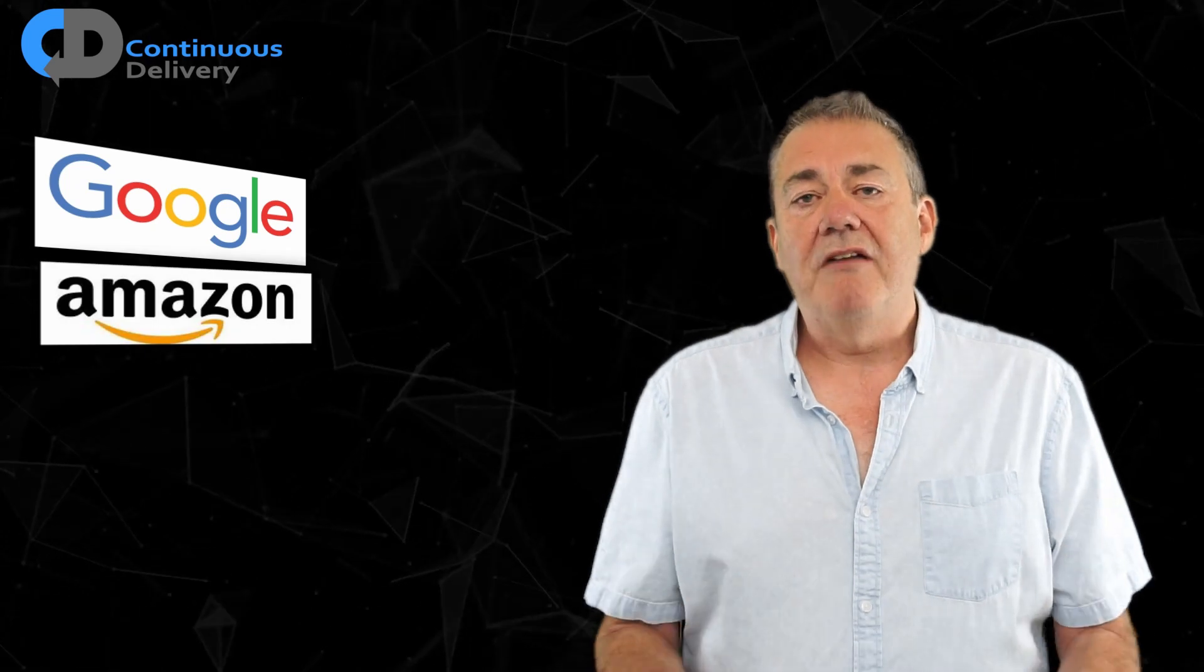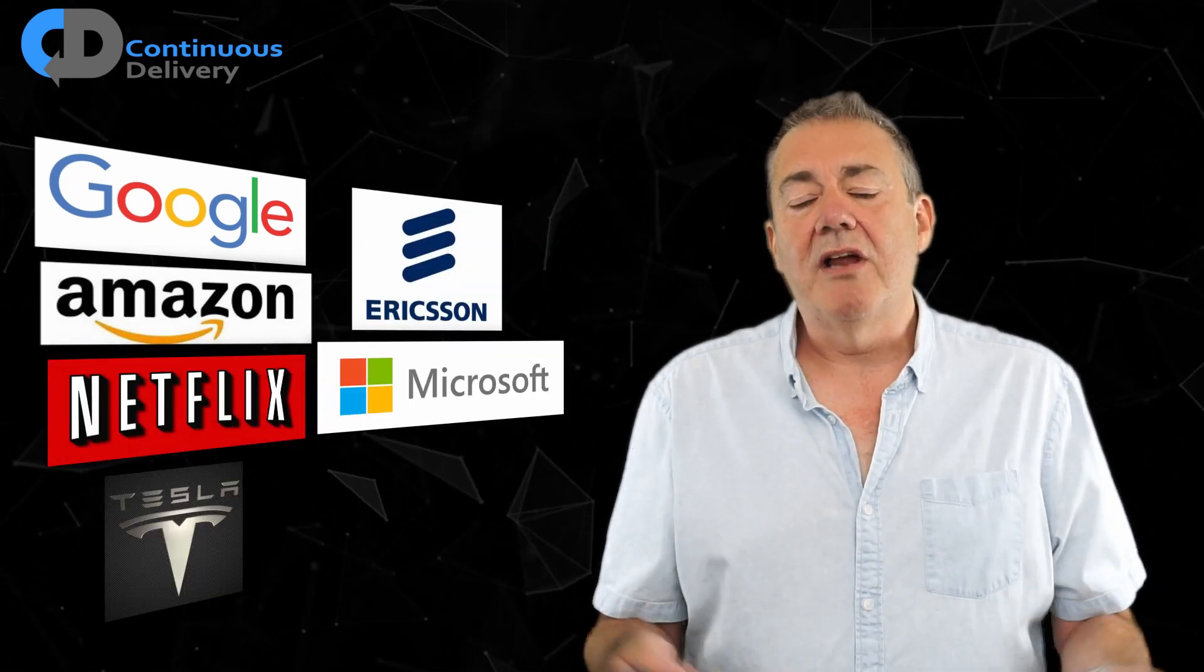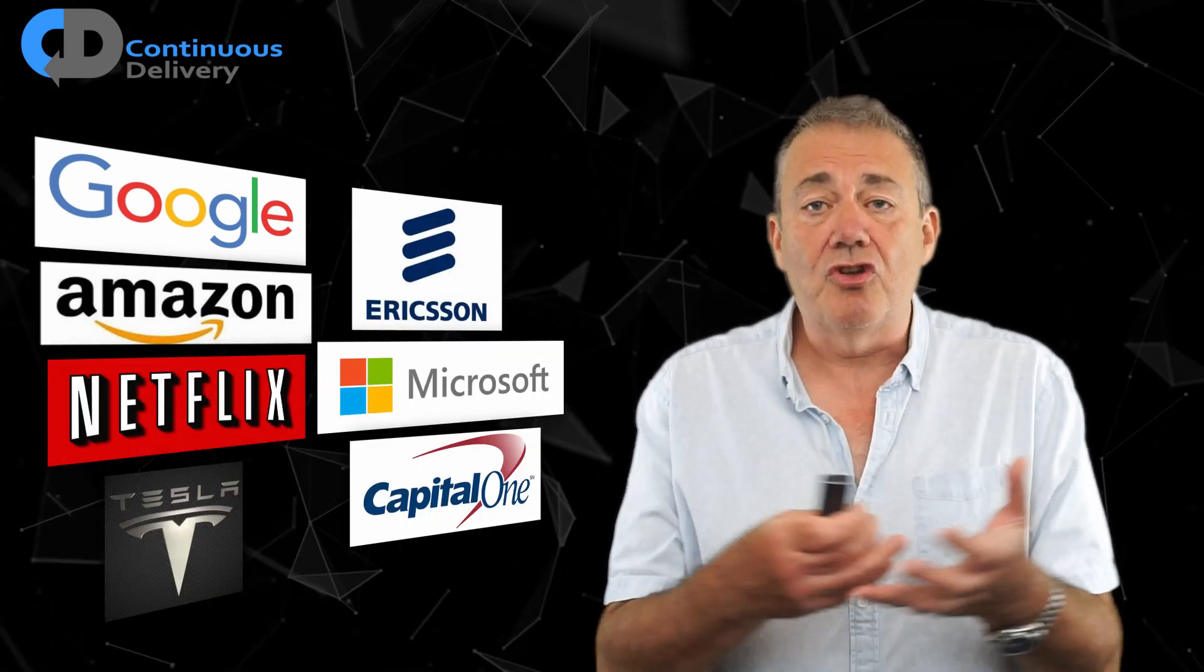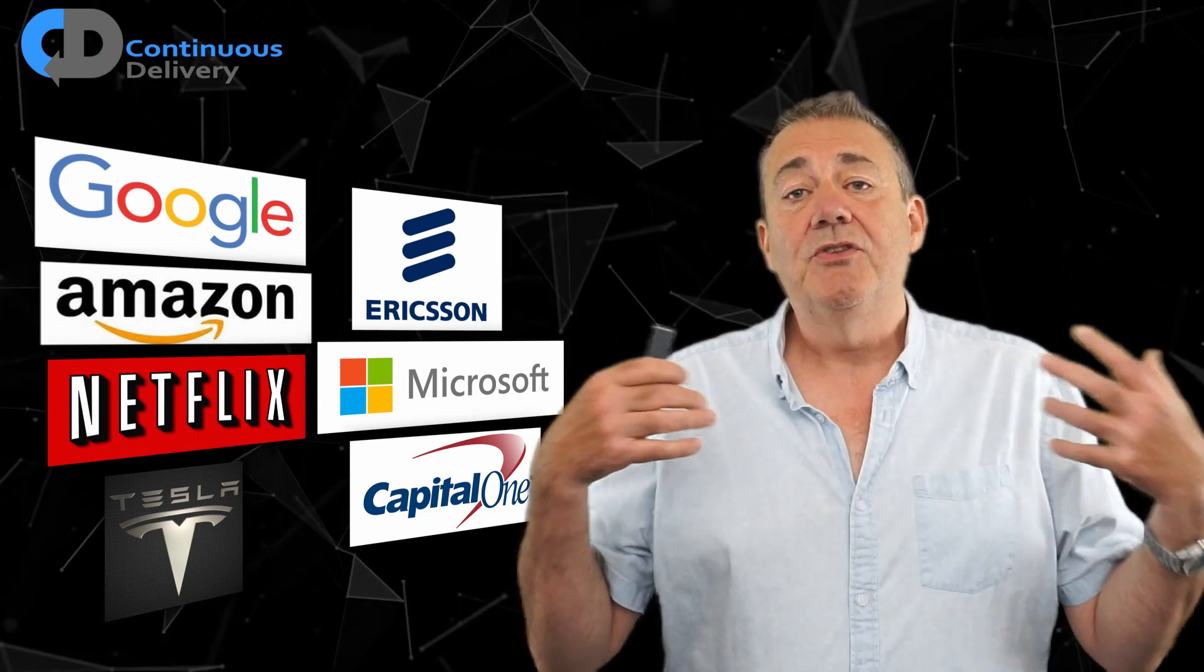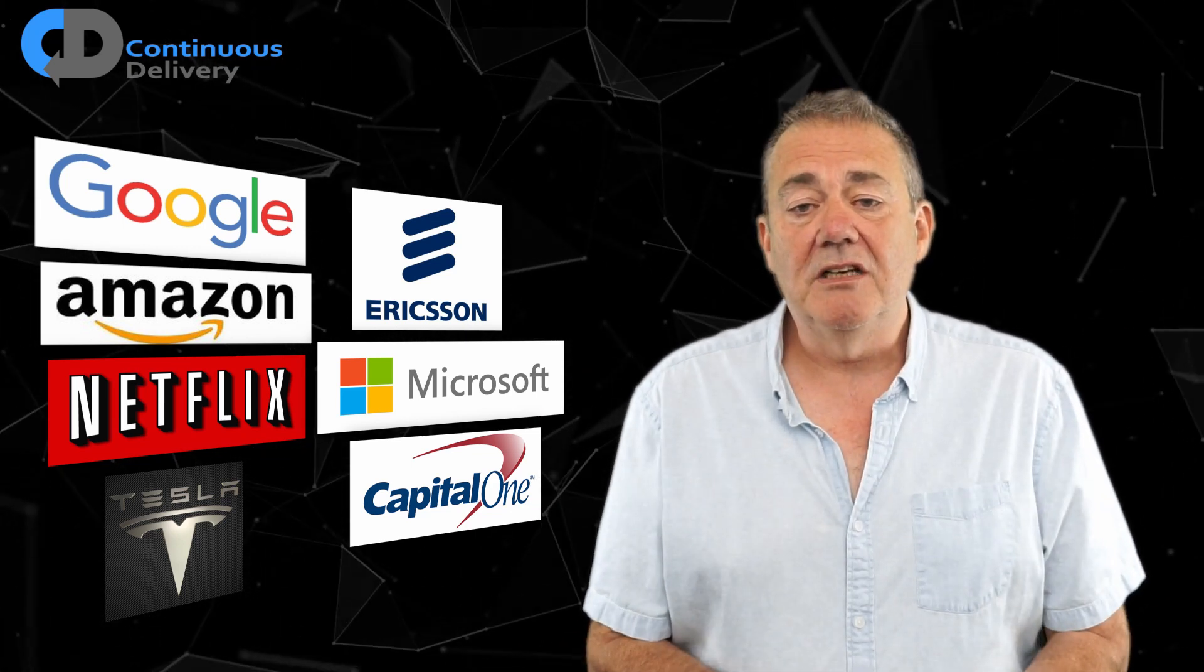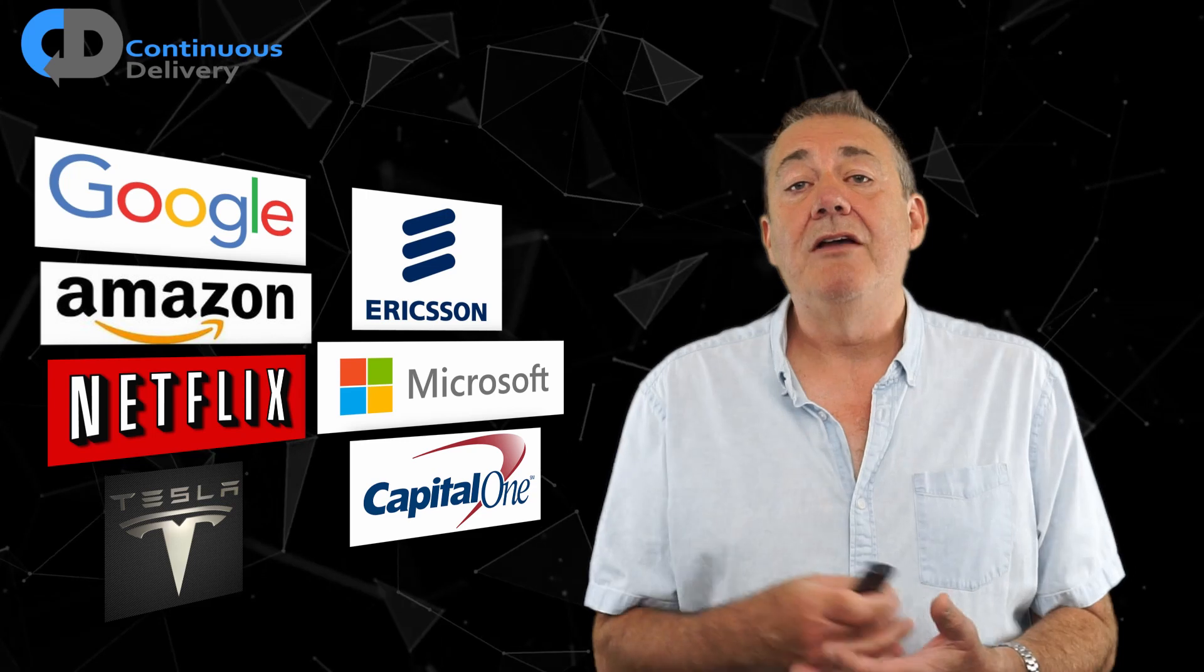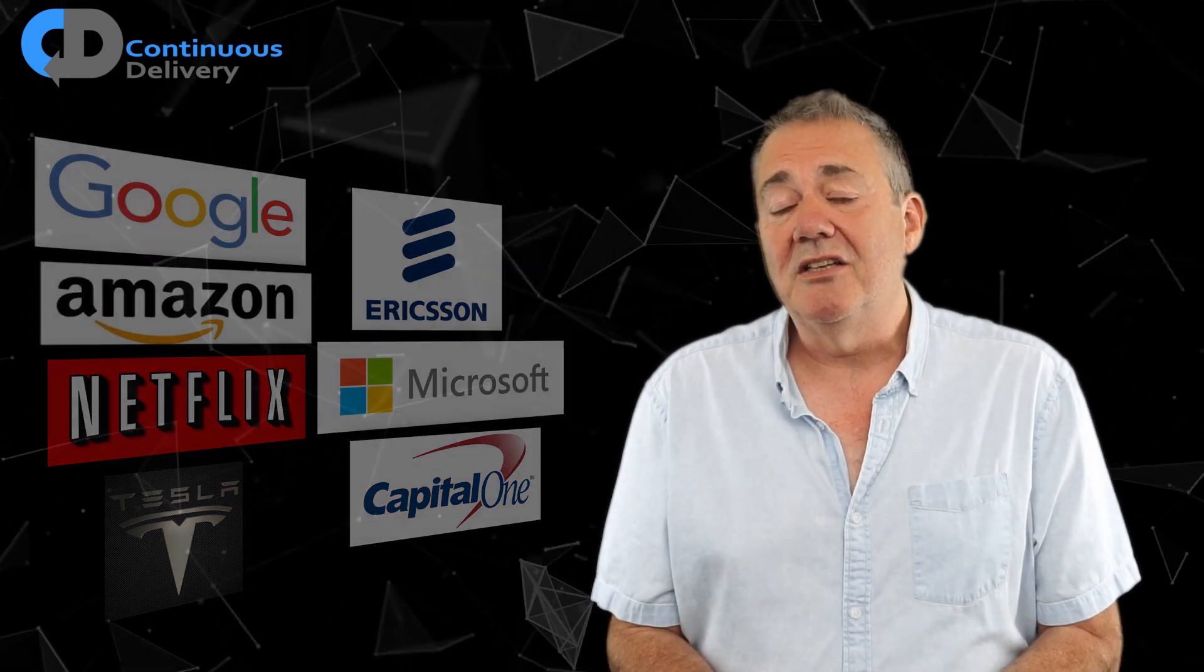Continuous delivery is the approach used by some of the biggest, most successful companies in the world. Google, Amazon, Netflix, Tesla, Ericsson, Microsoft, Capital One Bank are just some of the names that publicly talk about their practice of continuous delivery. Many other household names are already practicing continuous delivery or are working to make the transition towards it.